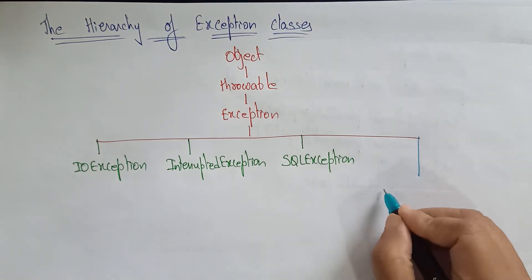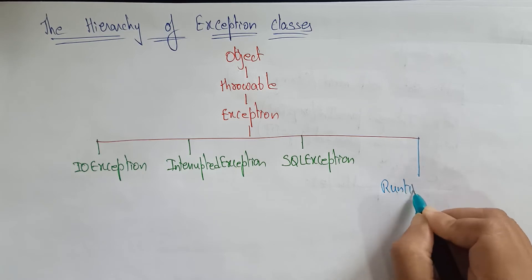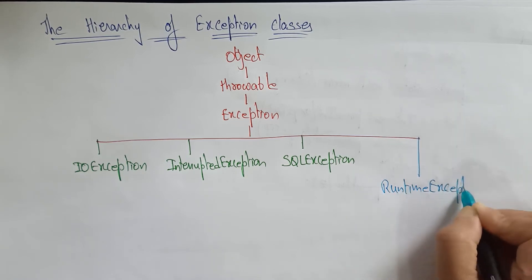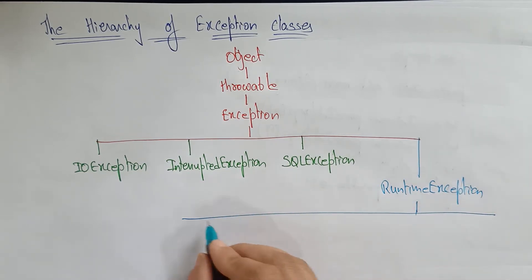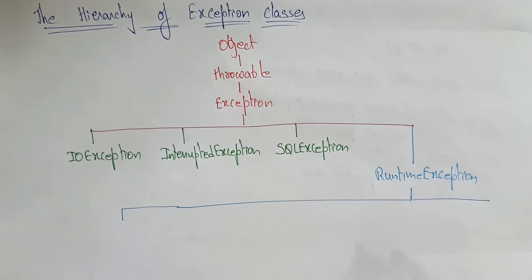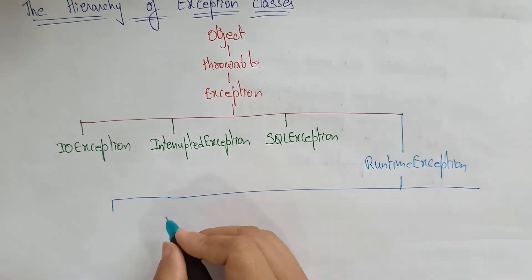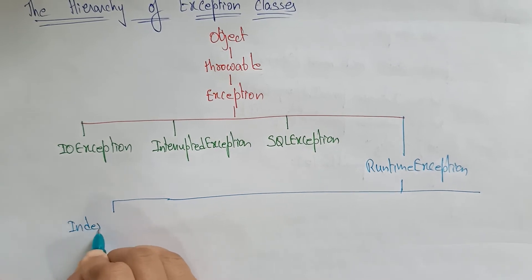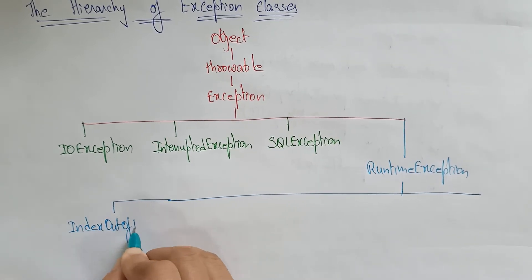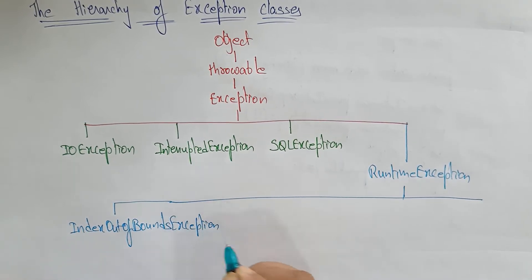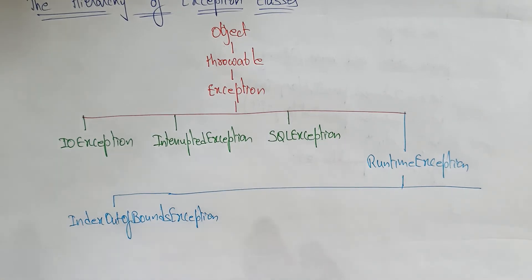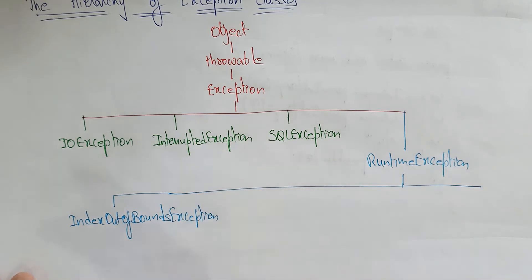And then runtime exception. Under runtime exception, there are so many exceptions. These are all unchecked exceptions. Runtime exceptions are unchecked exceptions — I already explained. Index out-of-bound exception means it is exceeding whatever — suppose if you declared an array of 10 size and you are trying to enter data which is more than the size of 10, then index out-of-bound exception is occurred.